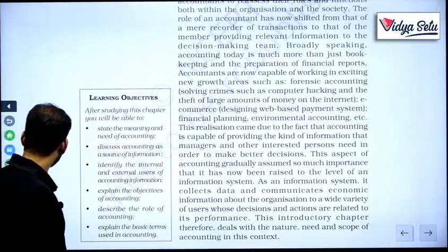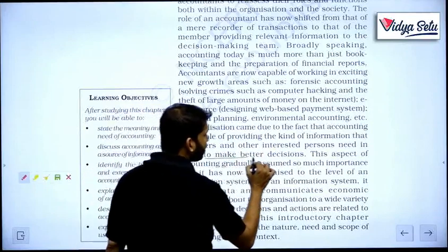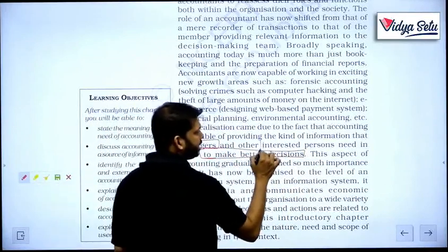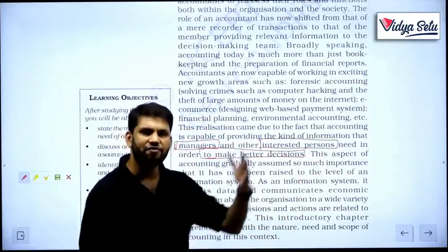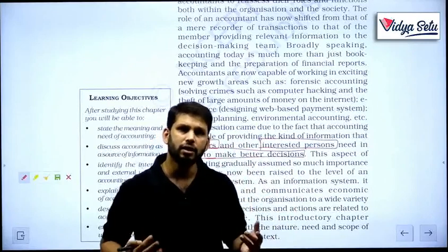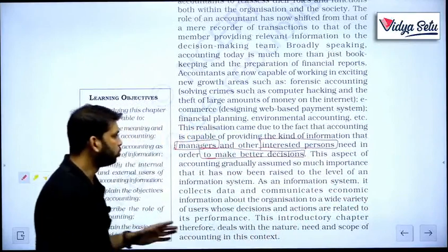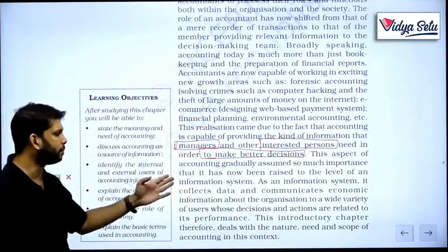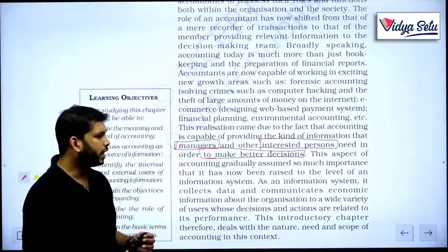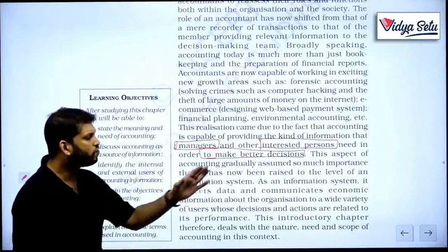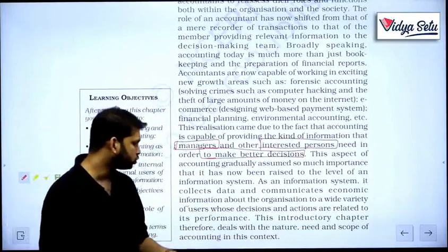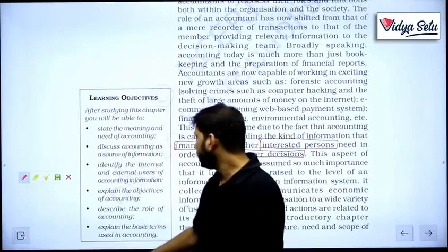This realization came due to the fact that accounting is capable of providing the kind of information that managers and other interested persons need in order to make better decisions. For example, if I want to buy land I'll first call my accountant to find out if I have the money to buy it. This aspect of accounting has gradually assumed so much importance that it has now been raised to the level of an information system — it collects data and communicates economic information about the organization to a wide variety of users.